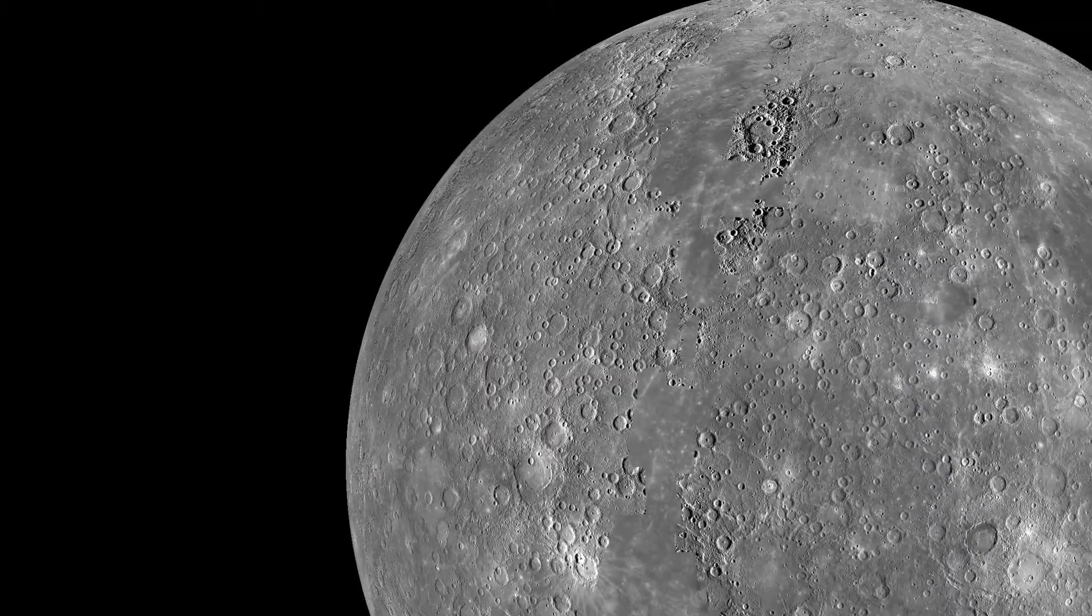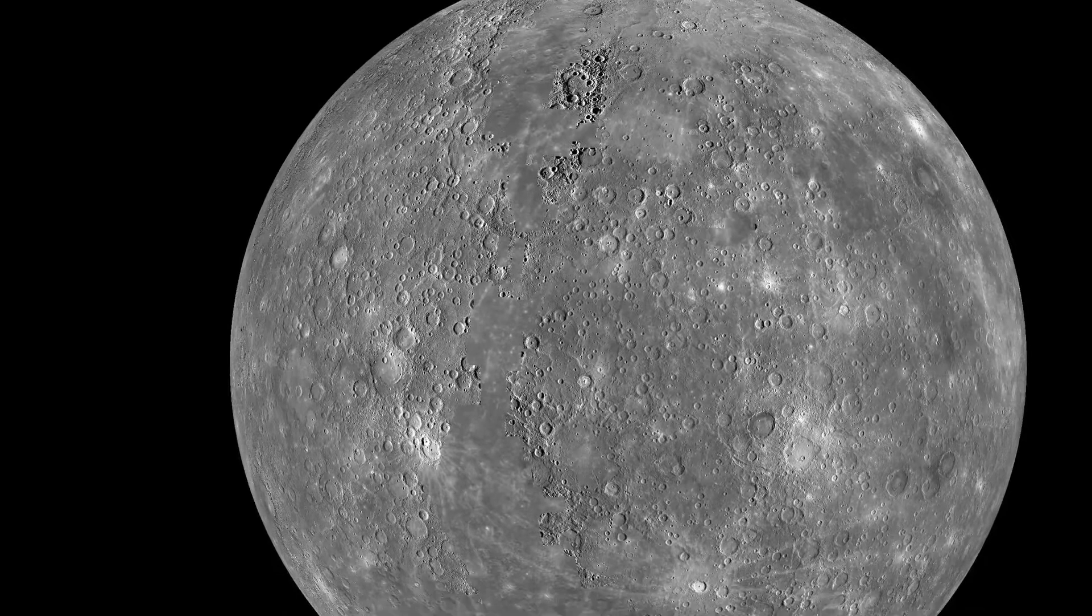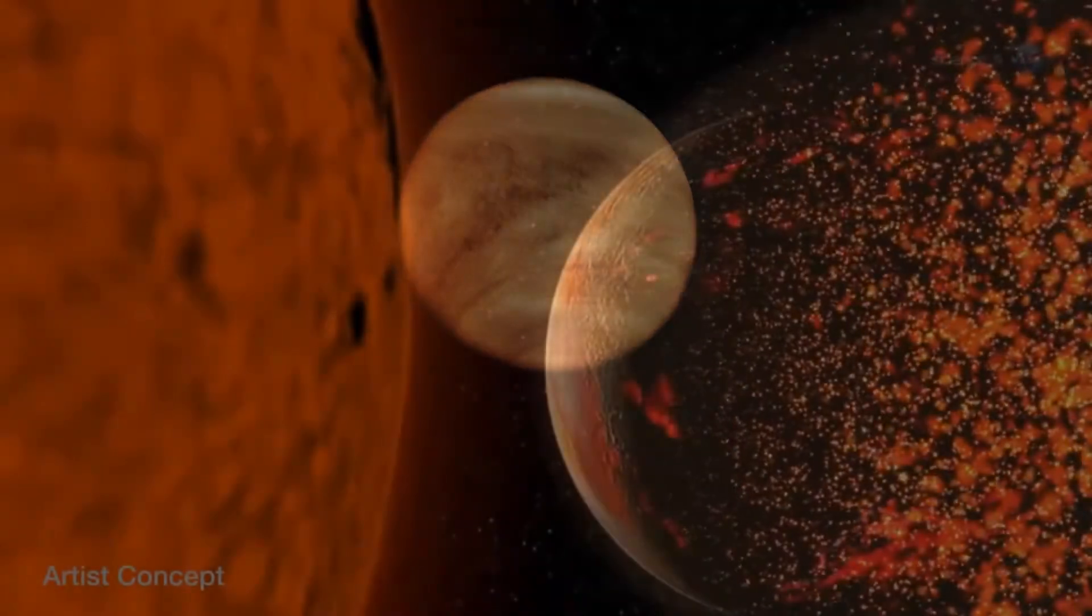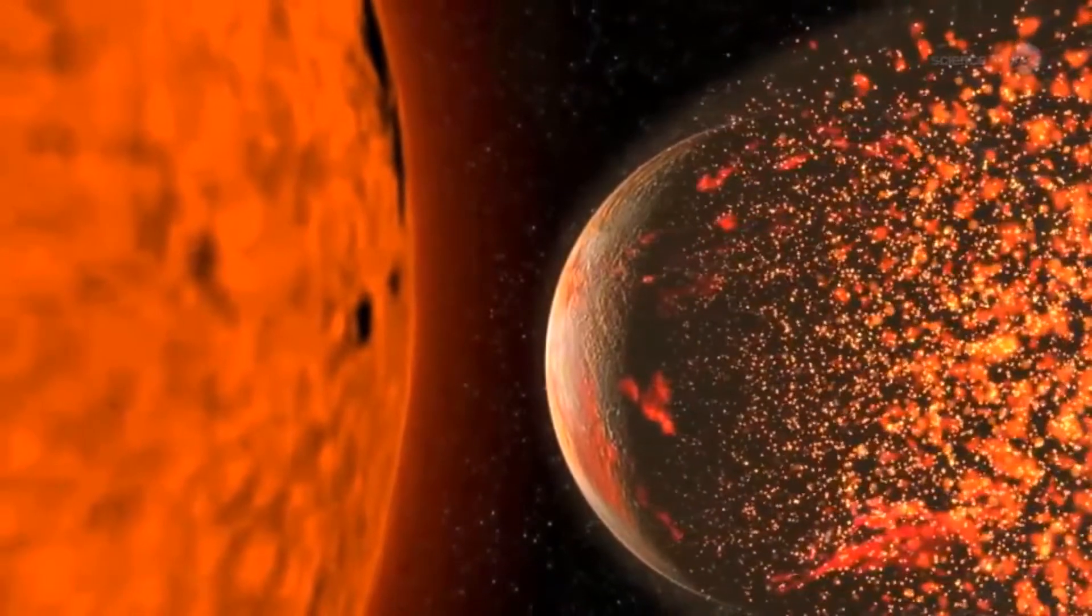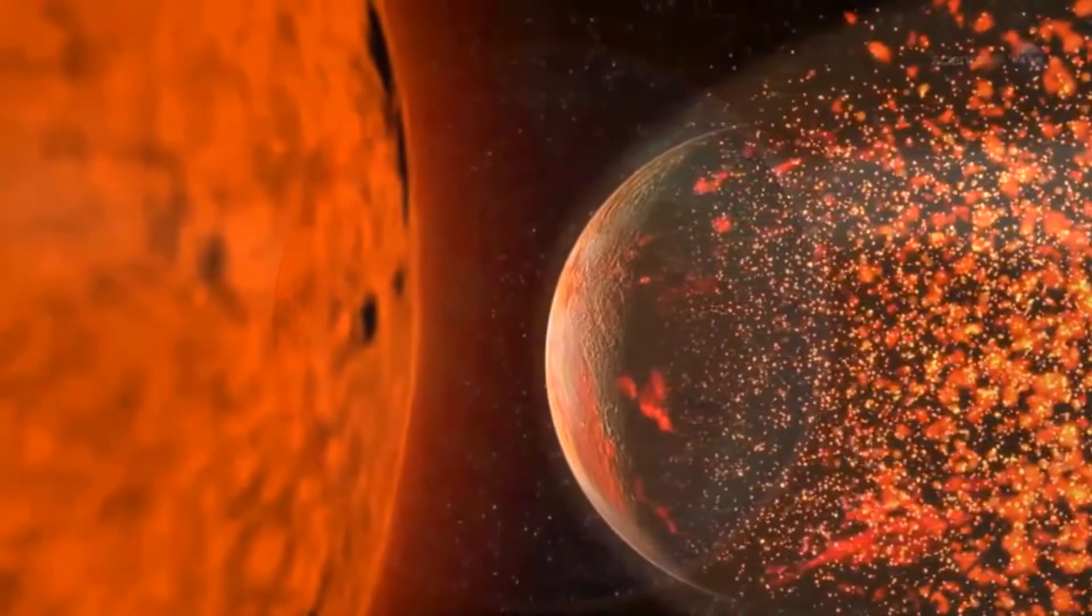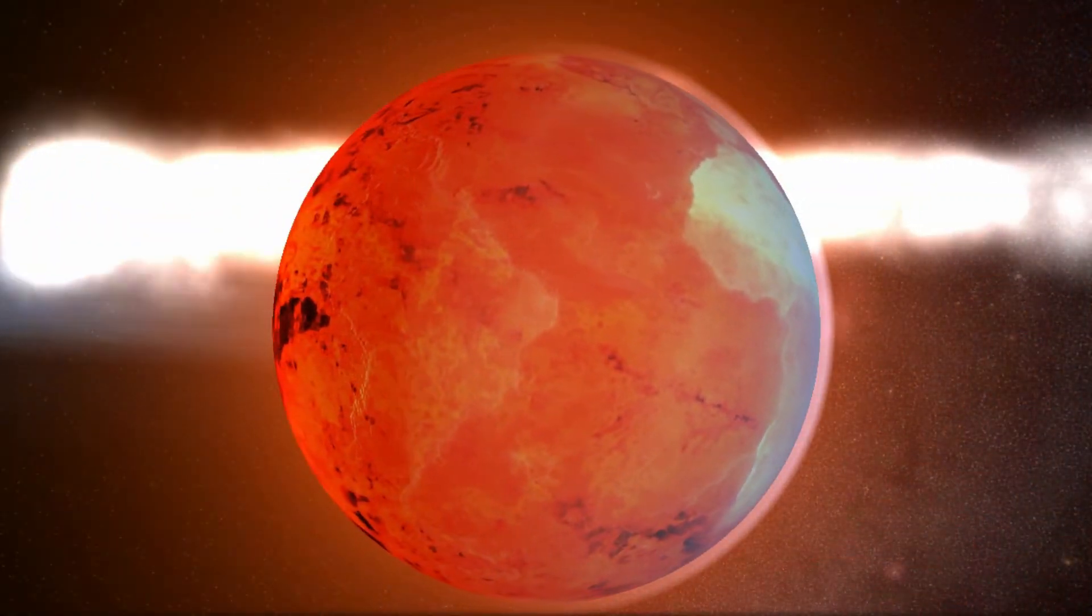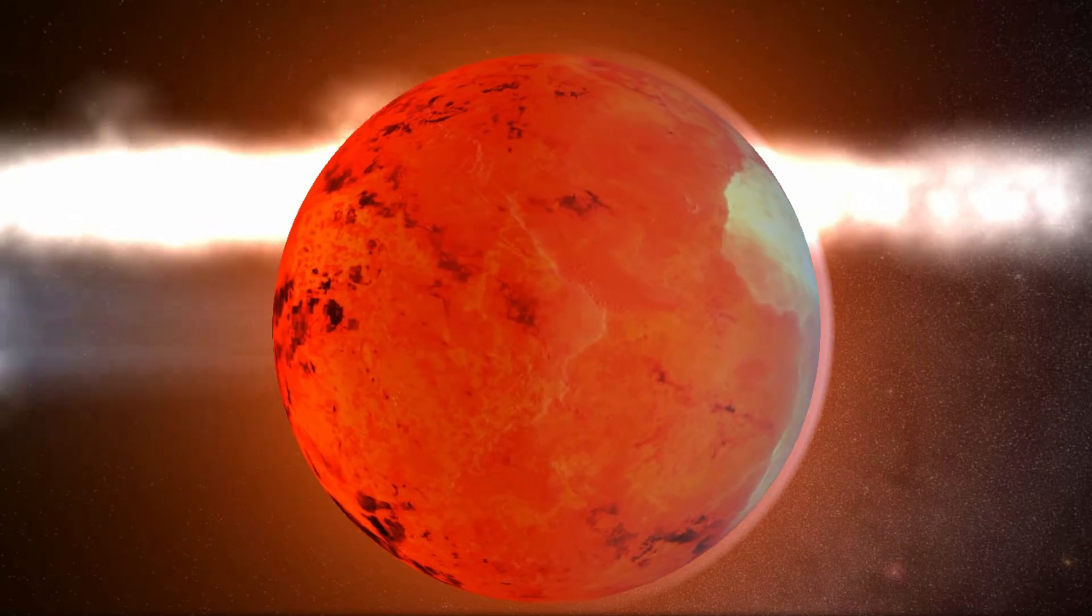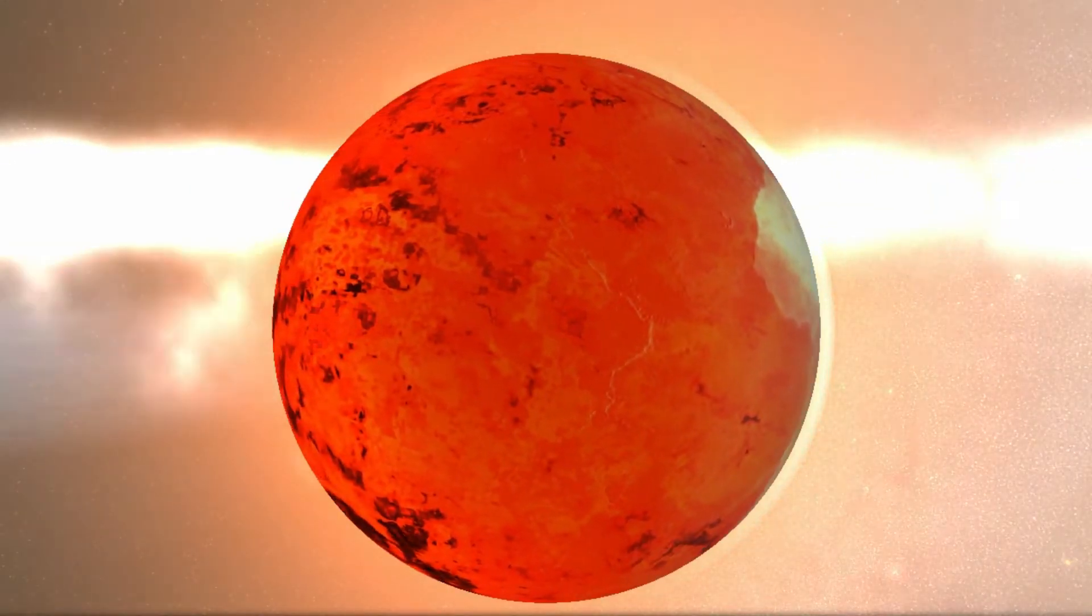In this era the Sun will have swallowed Mercury and Venus and possibly Earth. If not however, Earth will become a hellish planet with lava flowing on its surface.